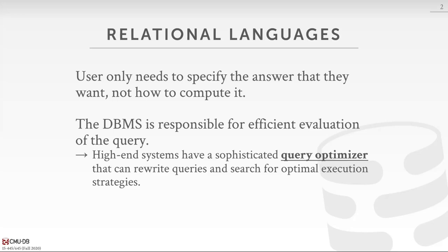How the database system generates a query plan is a complex process called query optimization, which we'll talk about a few weeks from now before the midterm. This is like the black art of database systems — that's the hardest part. If you know how to do query optimization, I can get you a job immediately because everyone building a database system has this problem and can't hire people fast enough. High-end systems like Oracle, SQL Server, and DB2, as well as open source ones like Postgres and MySQL, have sophisticated query optimizers that can do query rewriting and search algorithms to find the optimal ordering for operators in your query plan.